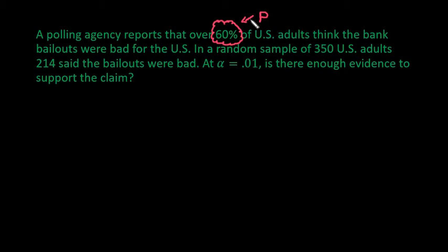So the parameter that we use or most textbooks use for this is p. Some other textbooks use p0 or they use pi, but using pi is confusing because then you think of other things. So most of the time we just use p for the population parameter proportion. So they reported that 60% of U.S. adults think the bank bailouts were bad for the U.S.